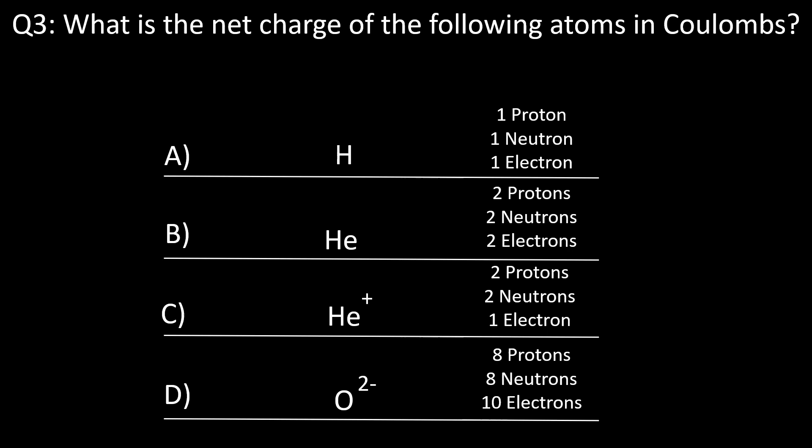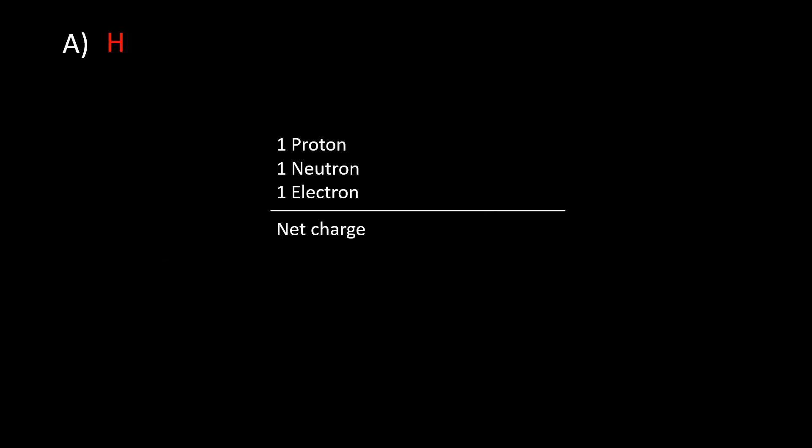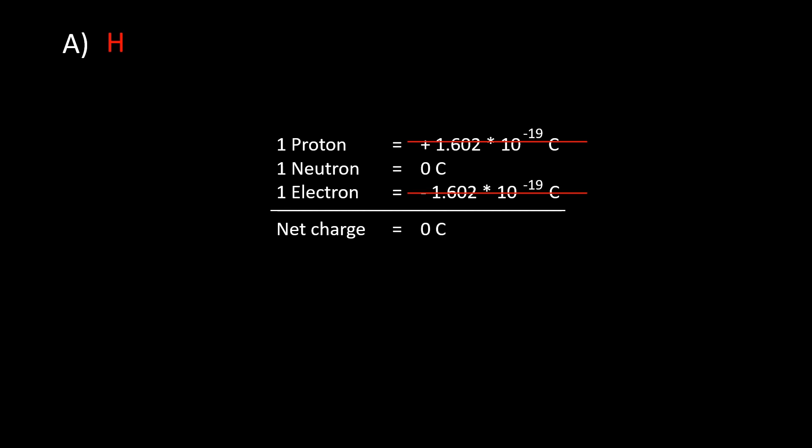Question 3: What is the net charge of the following atoms in Coulombs? For atom A, the net charge is zero Coulombs. There is one proton, one electron, and one neutron with no charge. The positive charge of the proton cancels out the negative charge of the electron, resulting in a net charge of zero.